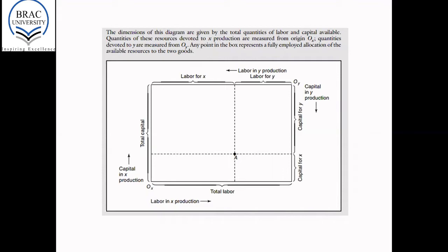This is pretty much the same diagram that we just used. Notice there are two origins for the two different products, OX and OY, which are diametrically opposite. And the amount of capital used in the production of X is measured on the vertical axis.